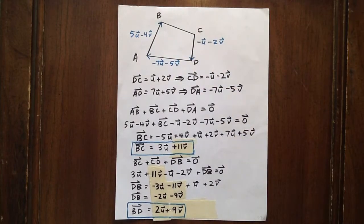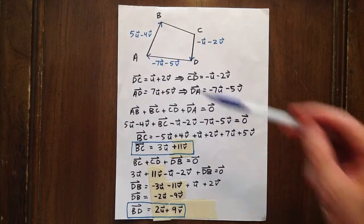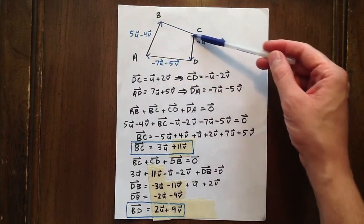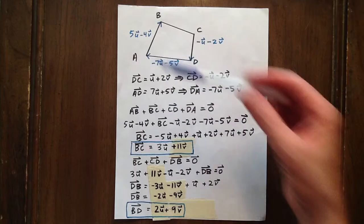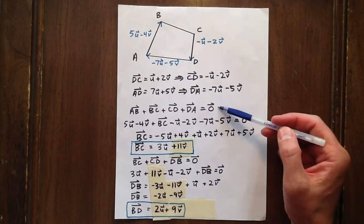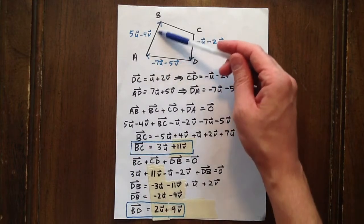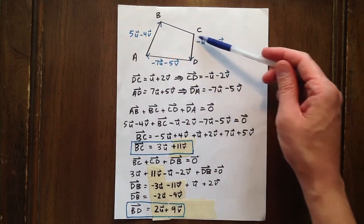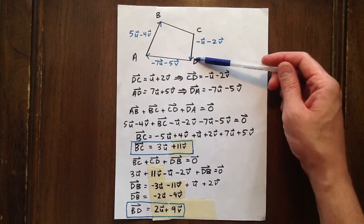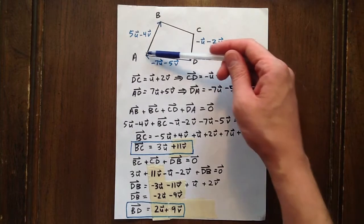Now we know that AB plus BC plus CD plus DA gets you right back to where you started, so that equals the zero vector, which means that 5U minus 4V plus BC plus negative U minus 2V plus negative 7U minus 5V equals zero.